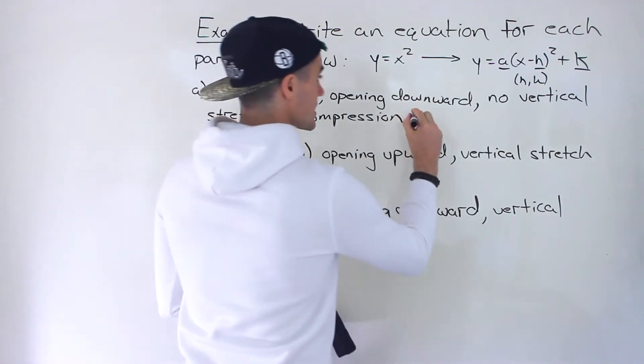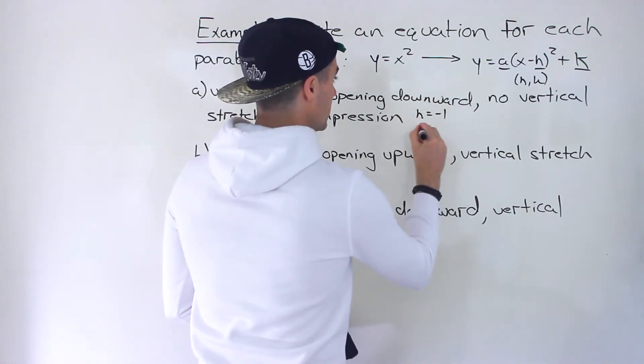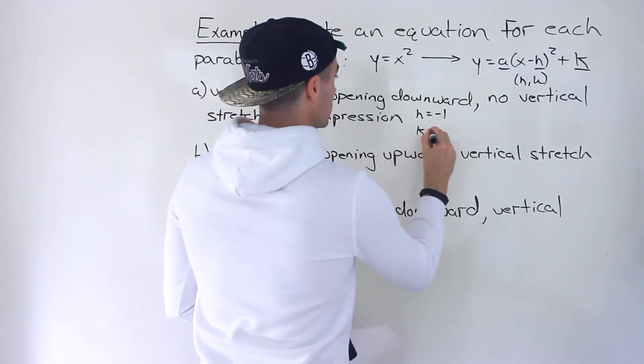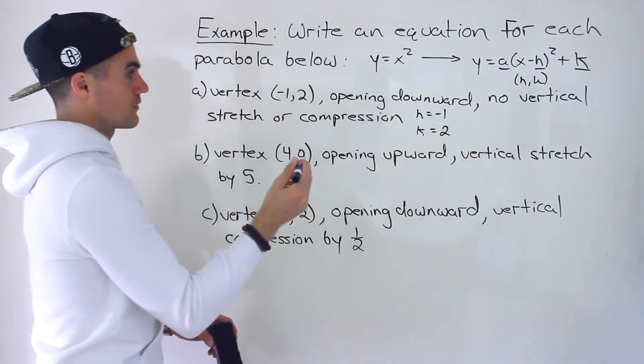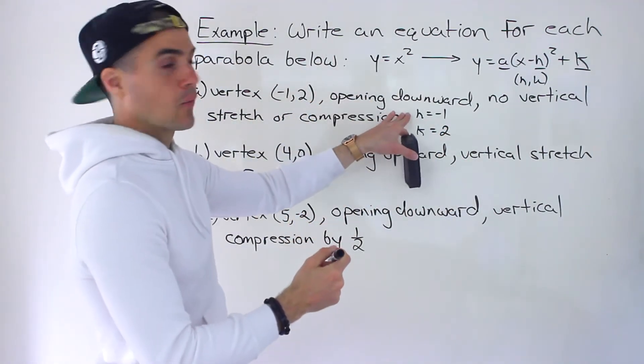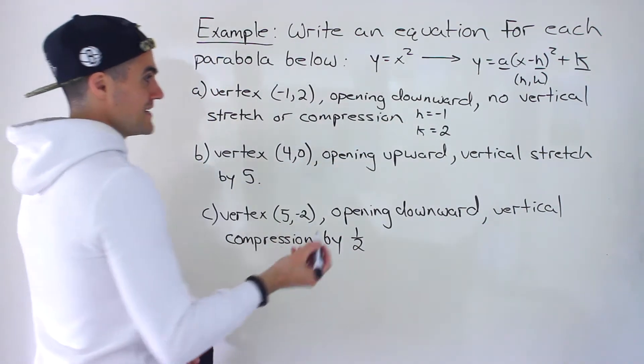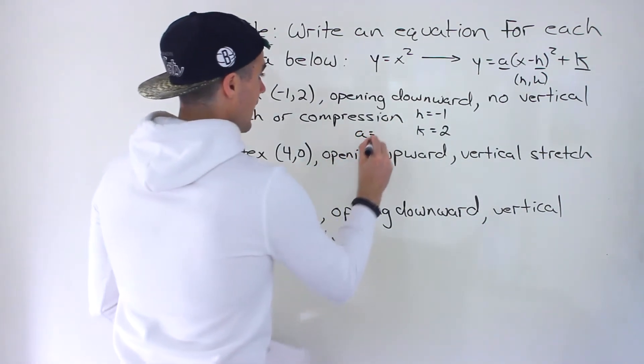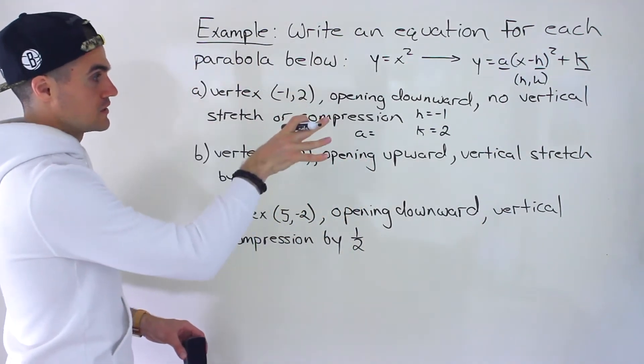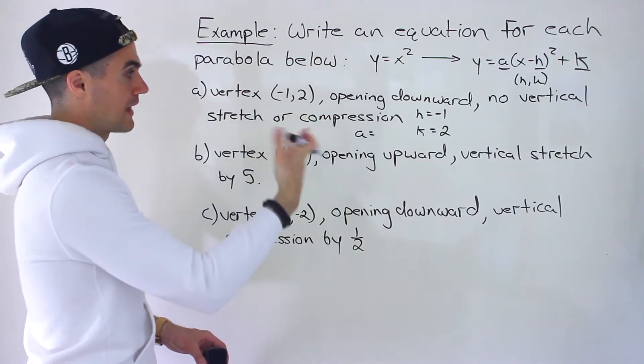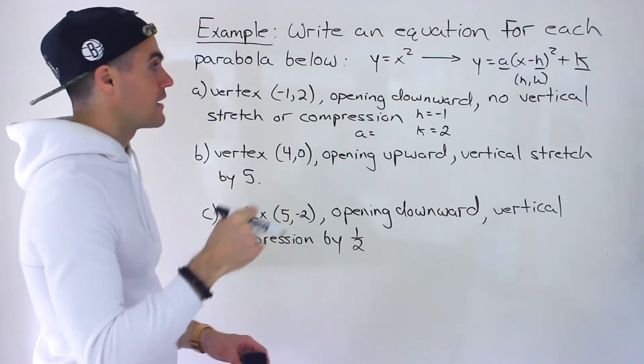So for part A, notice that the H value is negative one. The K value is two. So the y equals x squared shifted by one to the left and then two units up. What's missing is the A value.